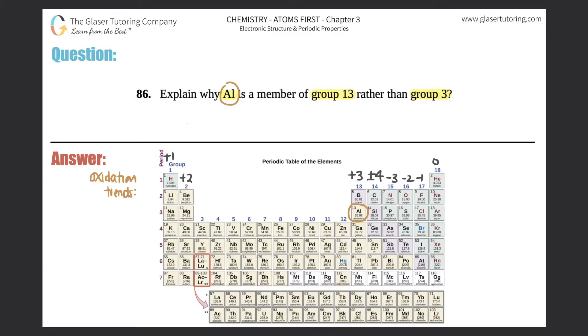For aluminum, the electron configuration, starting from the beginning, is 1s² 2s² 2p⁶ 3s² 3p¹. If you didn't know how to do that, go back to the past sections.